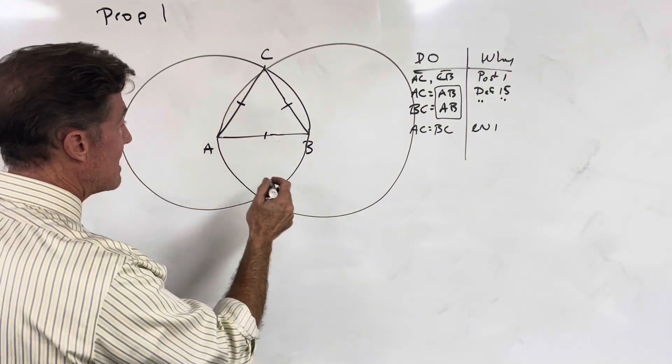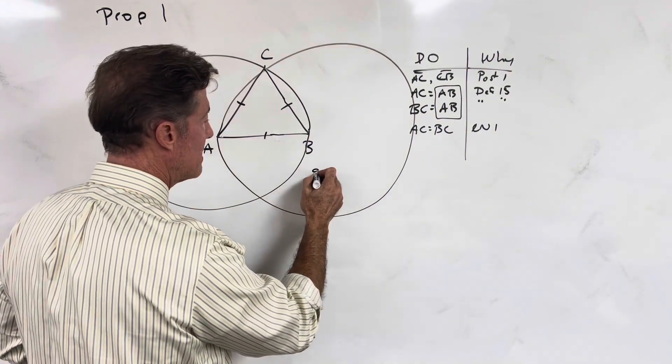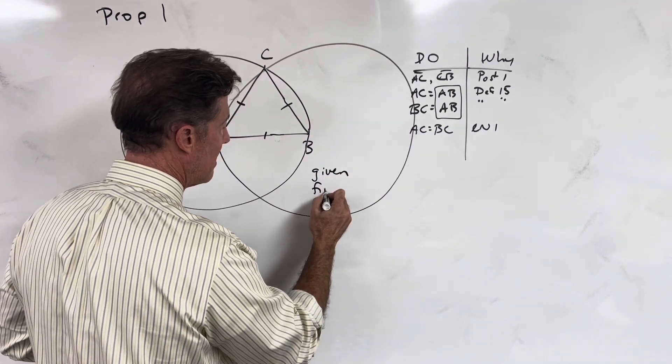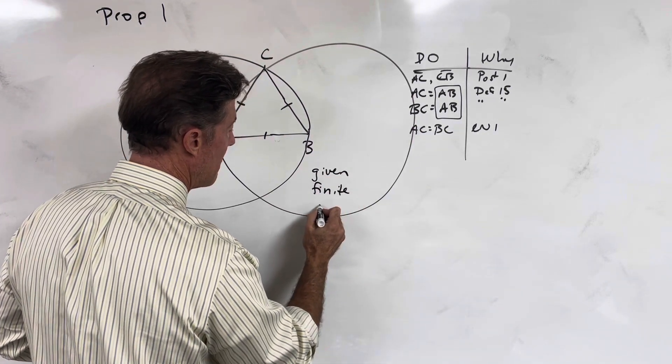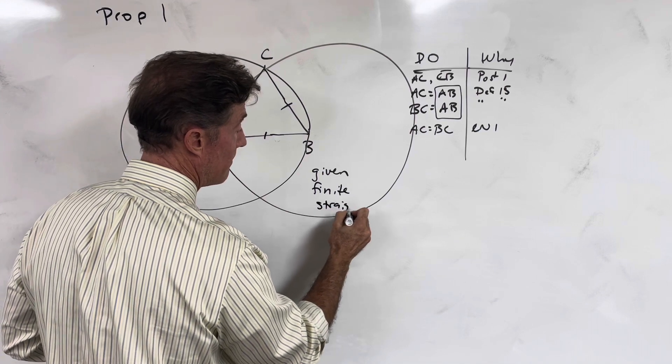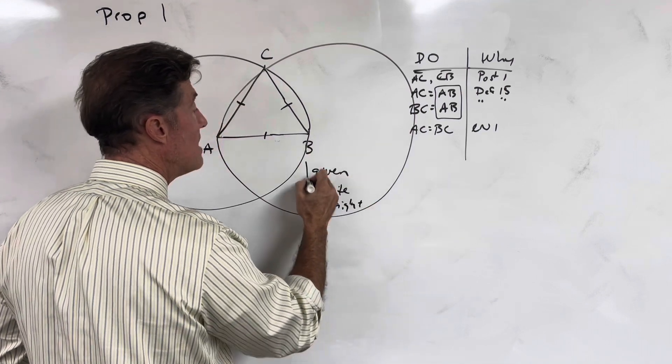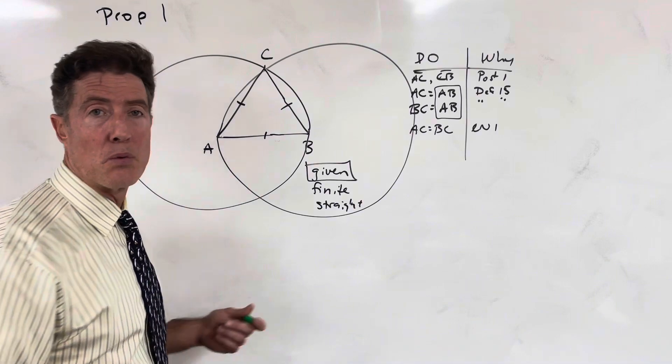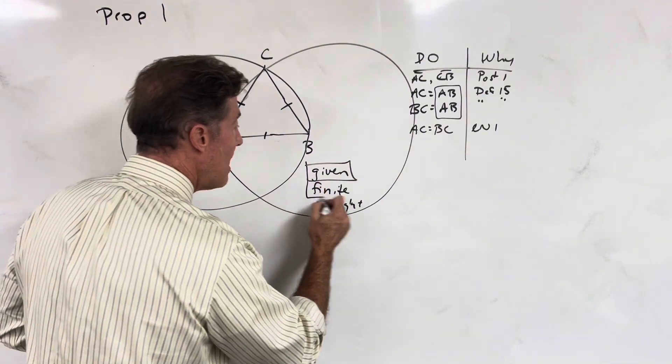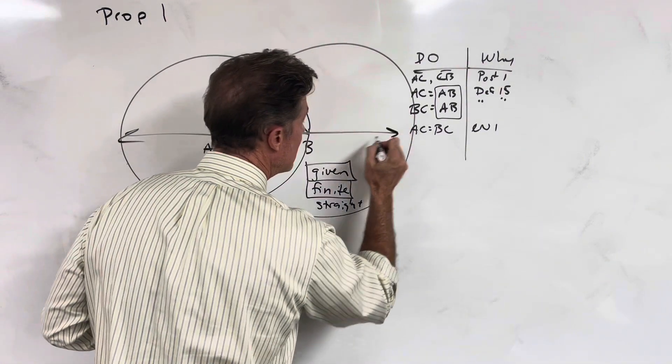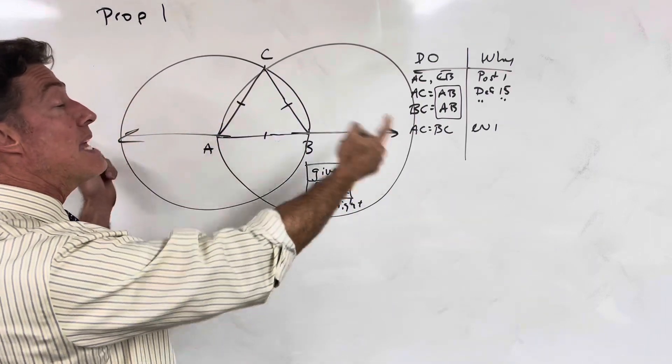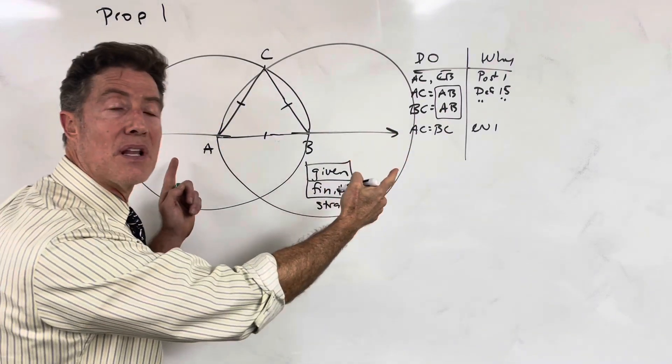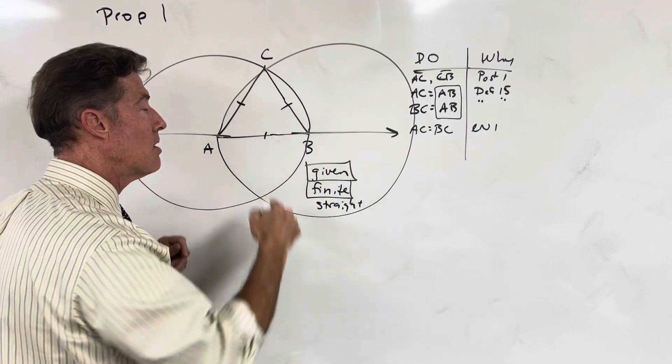Now, you could ask this question. Why does Euclid insist that the line be given, that the line be finite, and that the line be straight? Well, if it's not given to us, then we don't have anything to work with. If it's not finite, then it's infinite, and it extends indefinitely in both directions, and we can't find the extremities of an infinite line. So we can't build our circles.